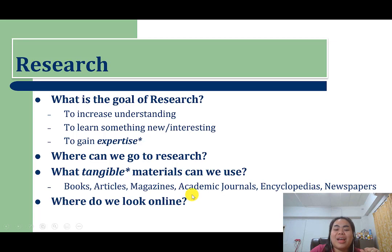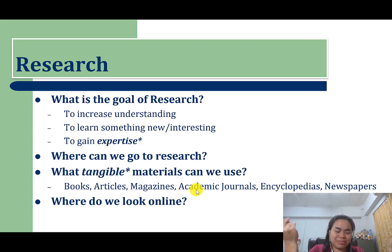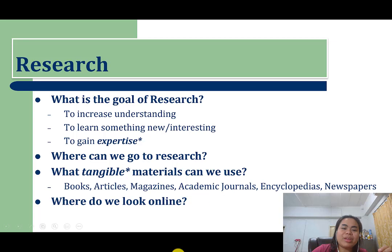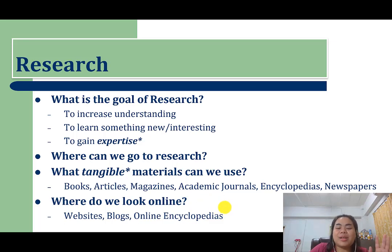Think about tangible materials: books, articles, magazines, academic journals, encyclopedias, and newspapers — these are physical materials you can find in the library or even while waiting in a clinic. Online, you have websites, blogs, and online encyclopedias. There are lots of places to look.